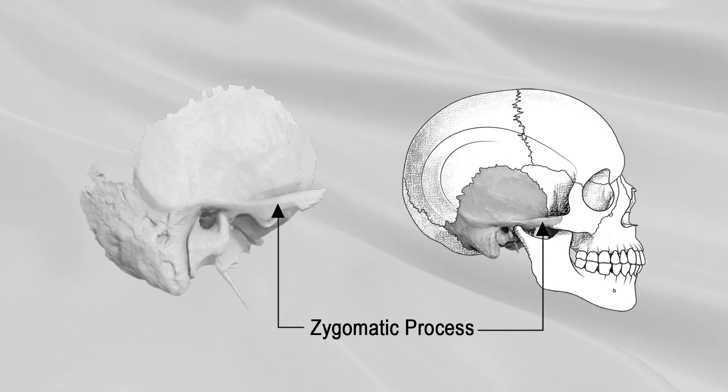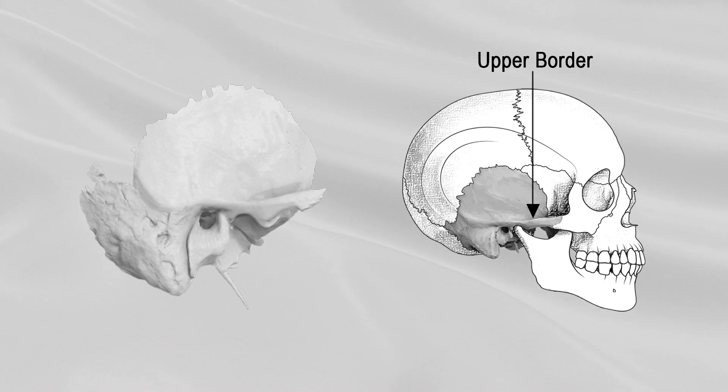Zygomatic process projects from the lower squamous part and presents two borders and two ends. Its upper border is long, thin, and sharp, while the lower border is short, thick, and arched. The anterior end articulates with the zygomatic bone.